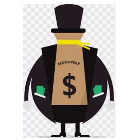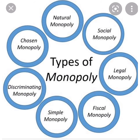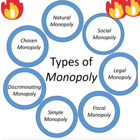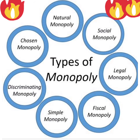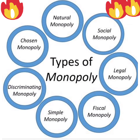Voluntary monopolies include trusts, in which two or more firms producing the same commodity voluntarily come together. There are also other types such as fiscal monopoly, simple monopoly, discriminating monopoly, and chosen monopoly. So there are different varieties of monopoly.